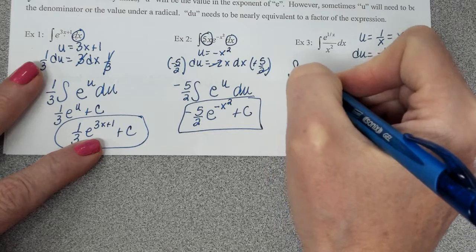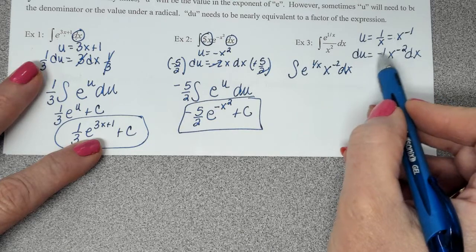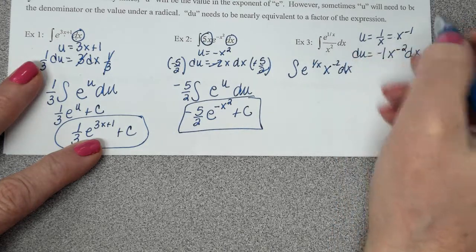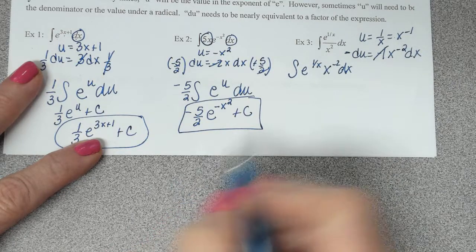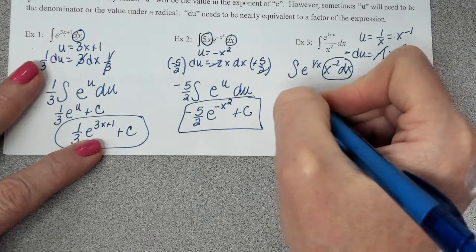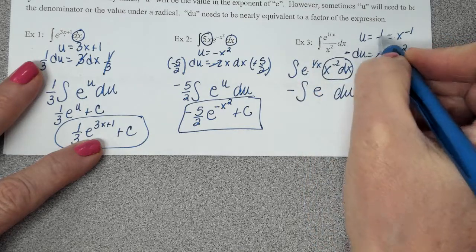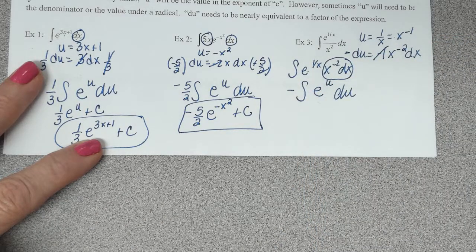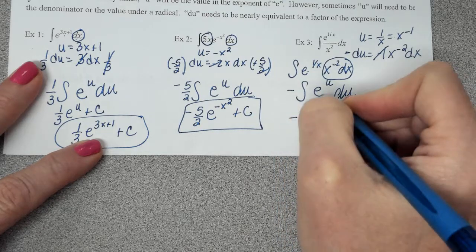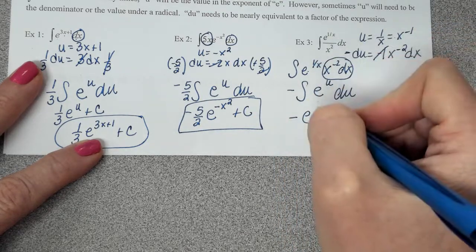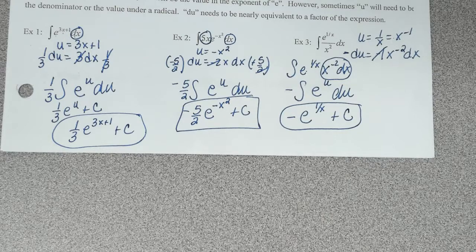All right. So this is really e to the 1 over x times x to the negative 2 dx, which is what we need. But we don't want the negative, so I'm going to multiply both sides by negative 1. If I multiply this side by negative 1, that goes away. Multiply that side by negative 1. So here's my x to the negative 2 dx. That's going to get replaced with negative du. Here's my e. It's to the u power. And now this is the simplest one we've done because the integral of e to the u is just e to the u. So it's negative e to the u, but looking back at what u is equal to, plus c.